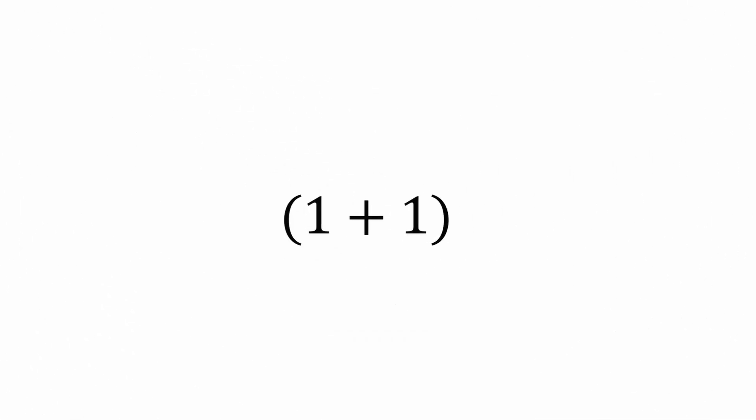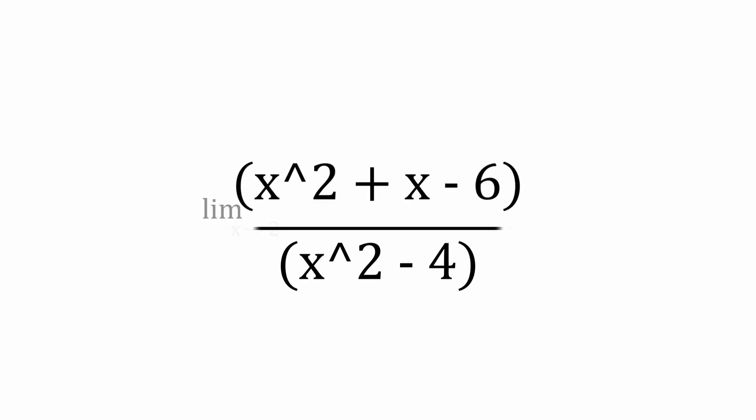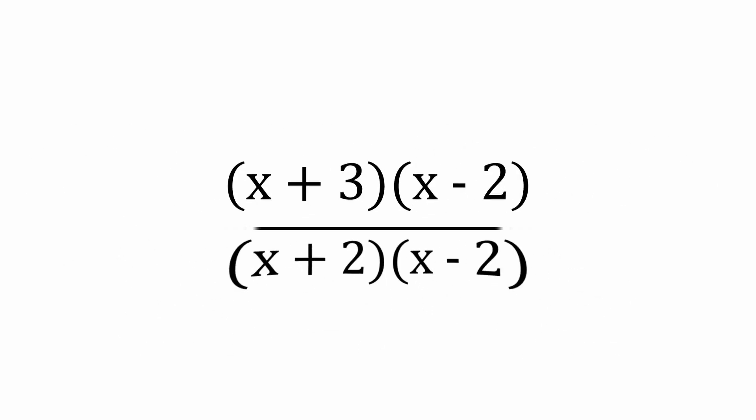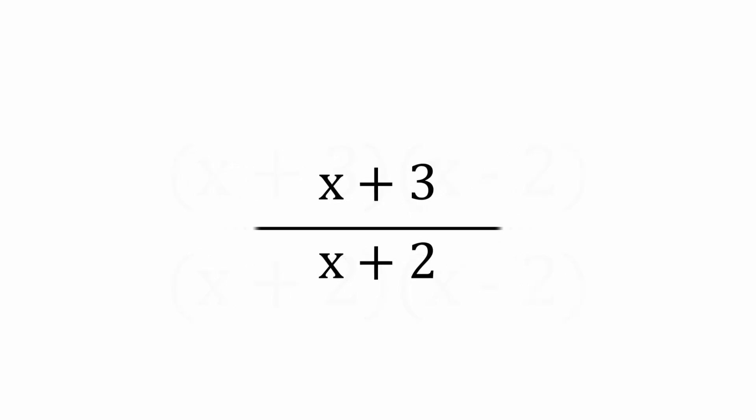Let's use another simple example. x squared plus x minus 6 divided by x squared minus 4. We can use quadratic factorization on the numerator and the difference of two squares on the denominator. This simplifies to x plus 3 divided by x plus 2, which is 5 divided by 4 at x equals 2.